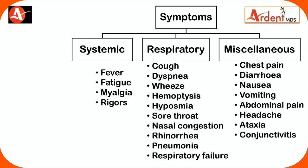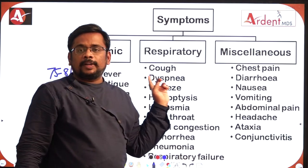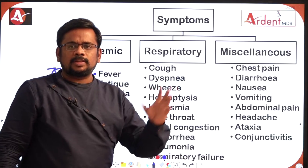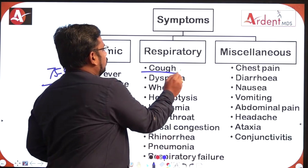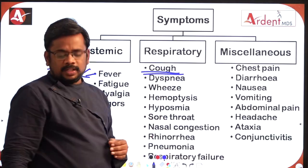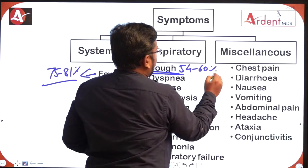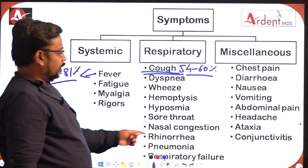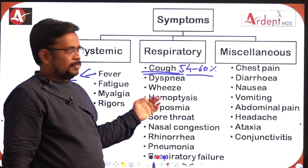The most common systemic manifestation is fever, seen in 75 to 81% of patients — this is an important MCQ. The most common respiratory symptom is cough, seen in around 54 to 60% of patients. Apart from cough, the patient may also have hemoptysis — that is blood in the sputum.